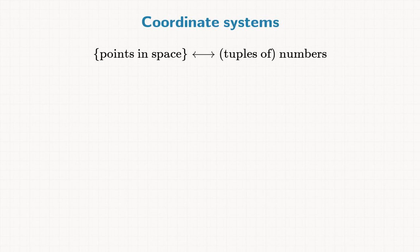For example, (-2, 3) could denote a point in the plane, or (1, 2, -1) could indicate a point in 3D space.